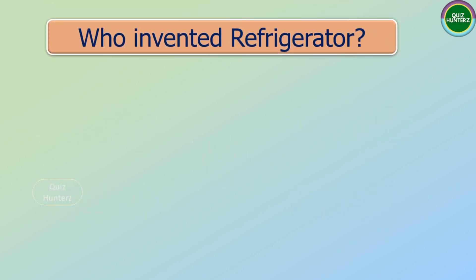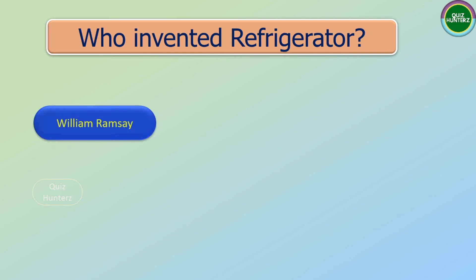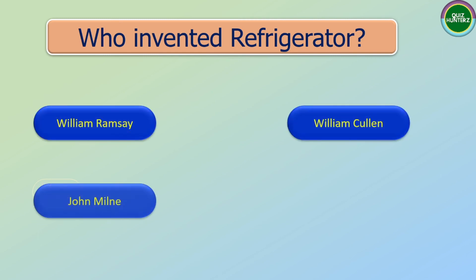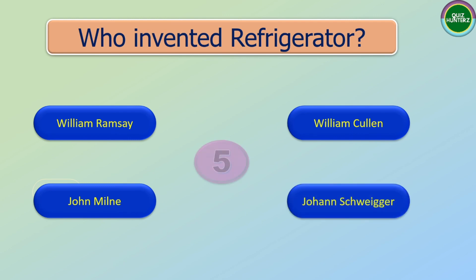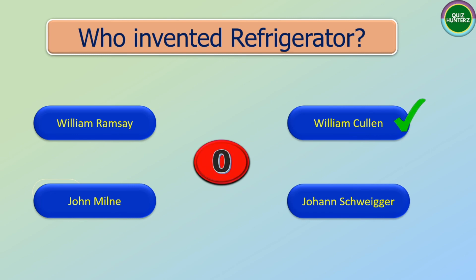Next question: Who invented the refrigerator? The options are: William Ramsey, William Cullen, George Milne, and John Swigler. And the correct answer is William Cullen.